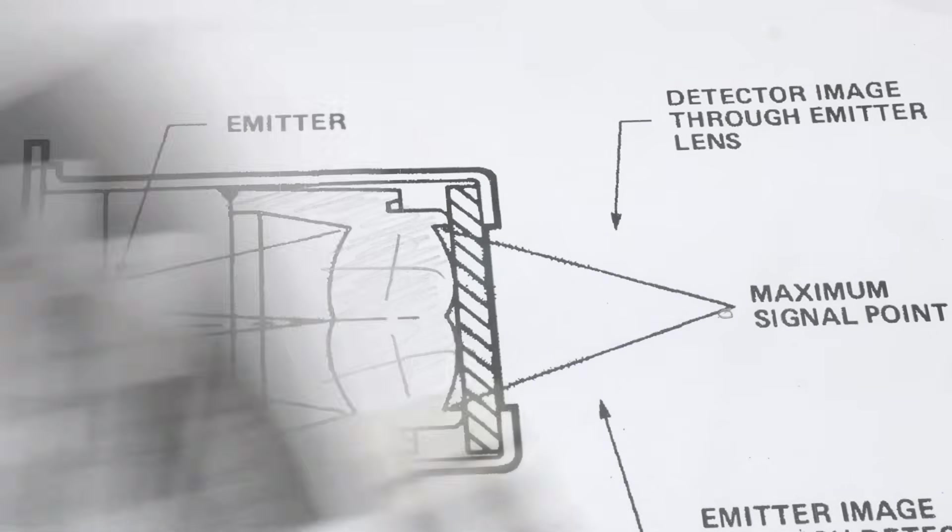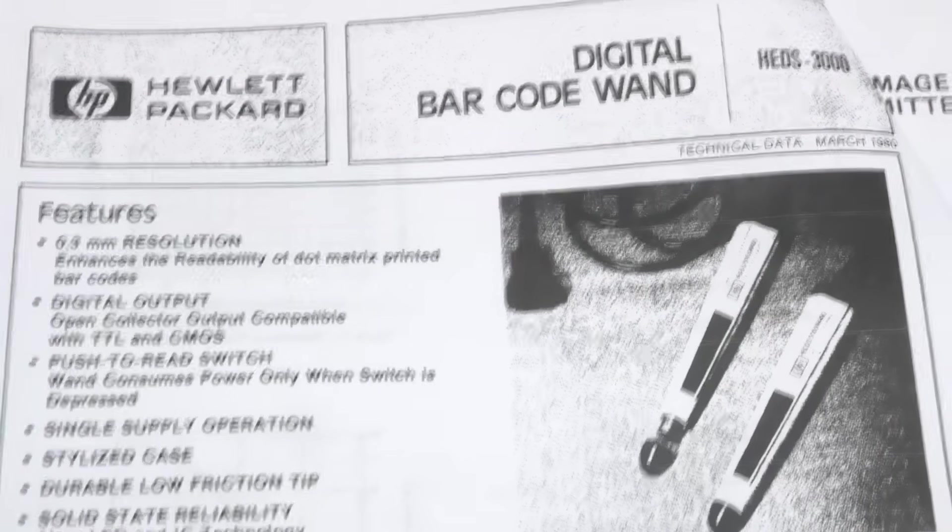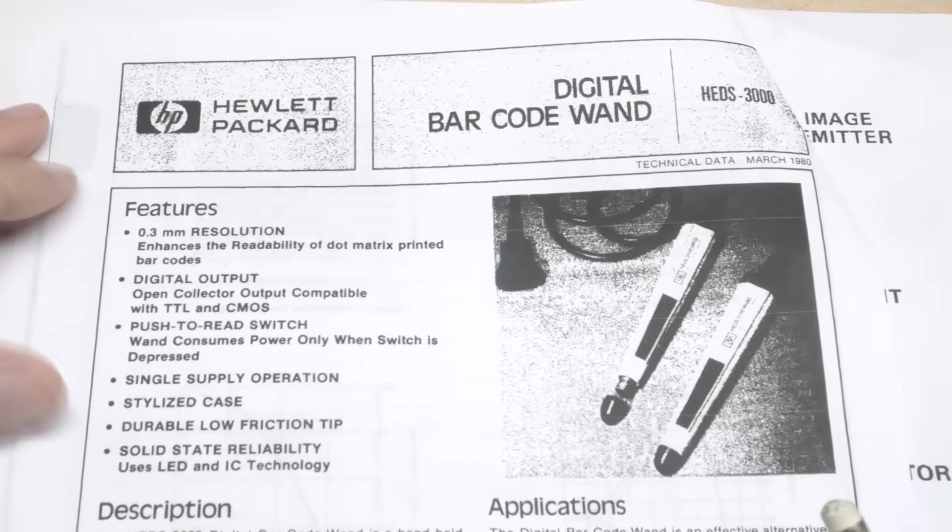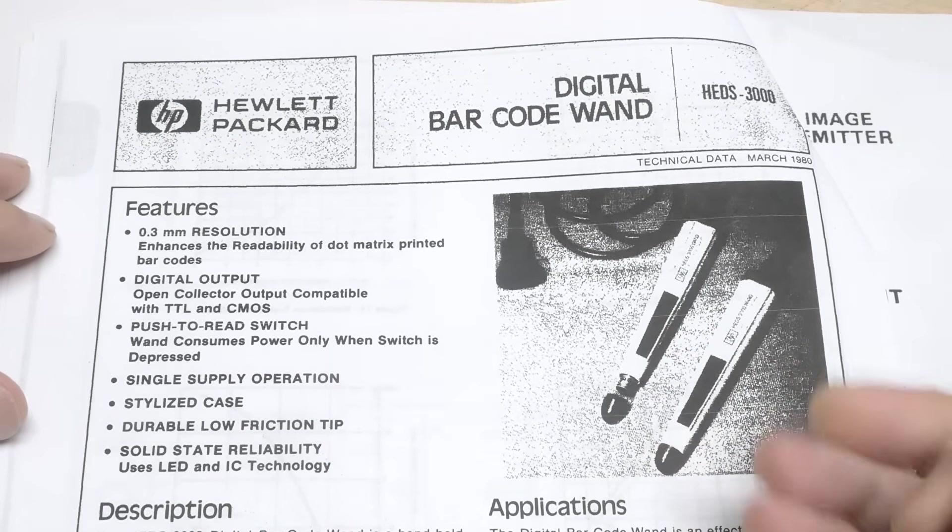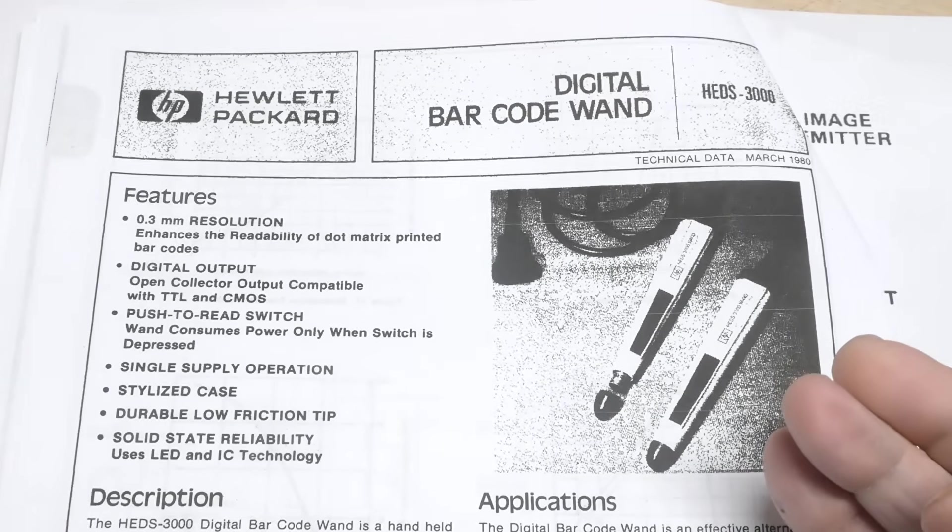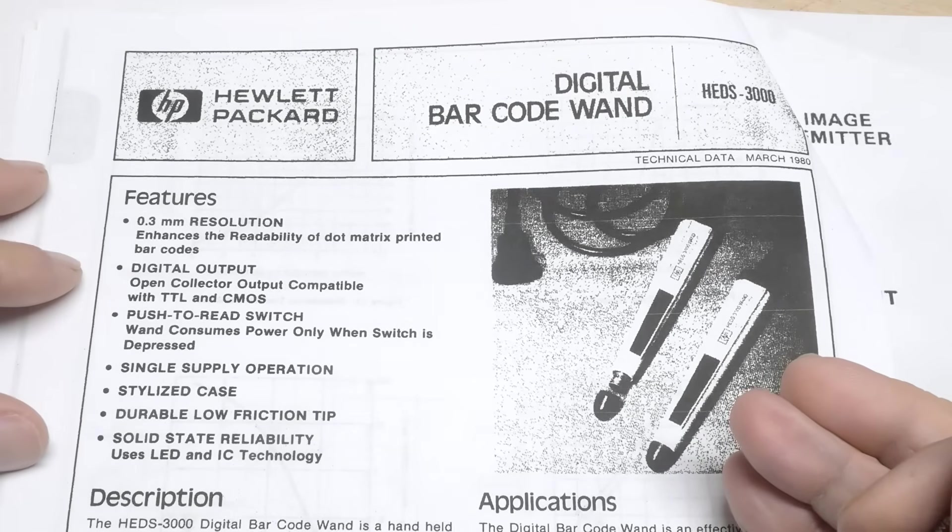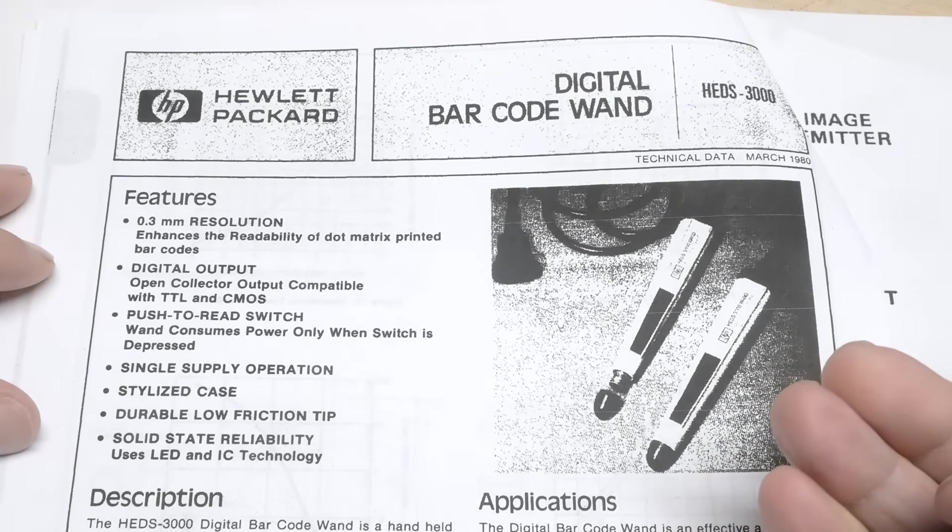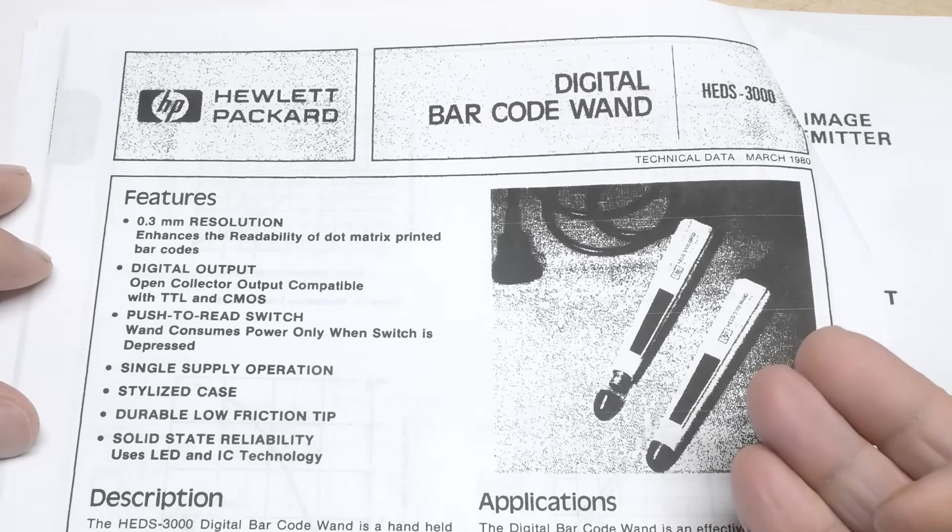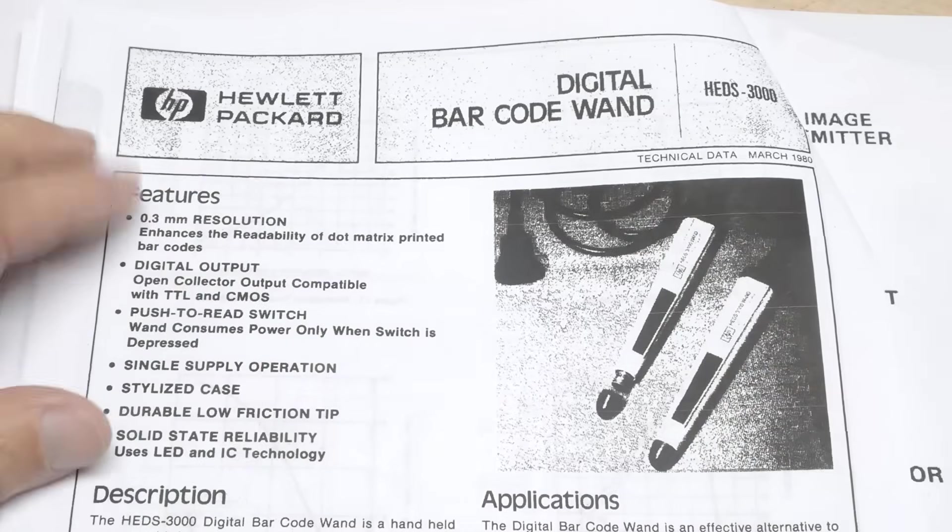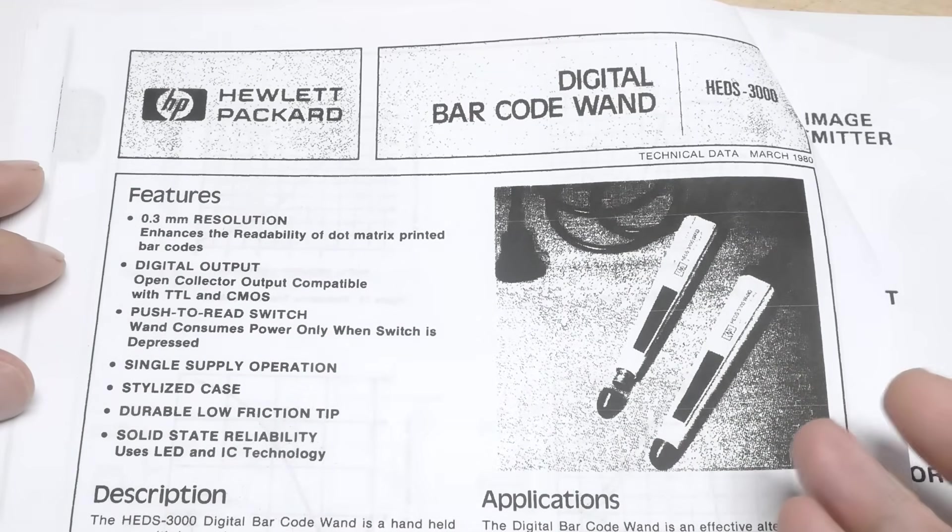So this is one of the applications, like I said, for barcode reading. One of the reasons this wand was actually created was for the HP calculator, the HP 41 calculator had the ability to do a lot of programming and stuff, and we needed a way to get programs into the calculator easily instead of you having to type them in.